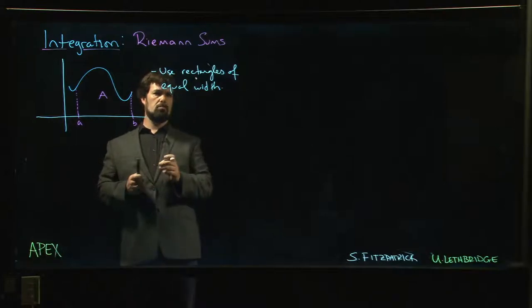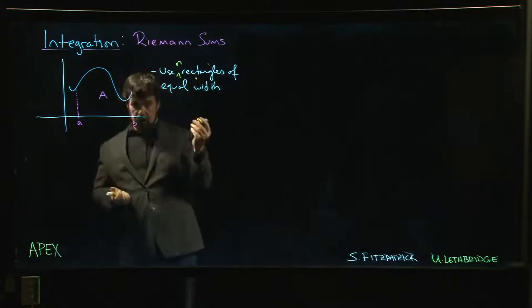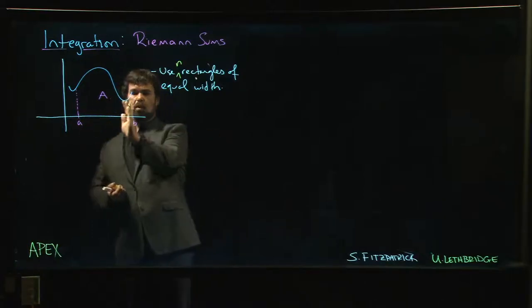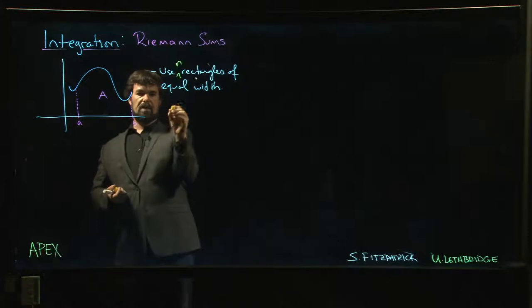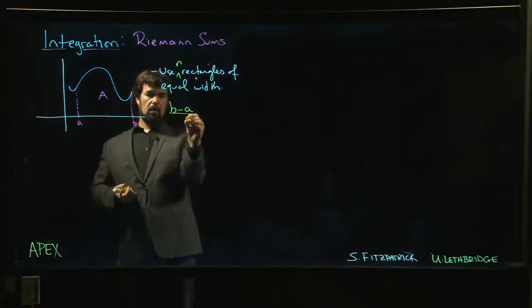We want equal width, so how wide is that equal width? Well, how many rectangles are we going to use? Let's say we're going to use n rectangles. We know that we have this total width of b minus a that we have to cover. We're going to divide that into n equal pieces, so we know exactly how that works: (b minus a) over n.